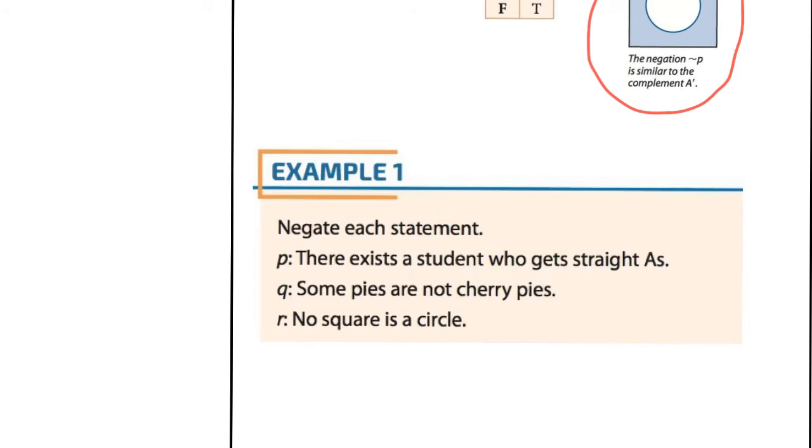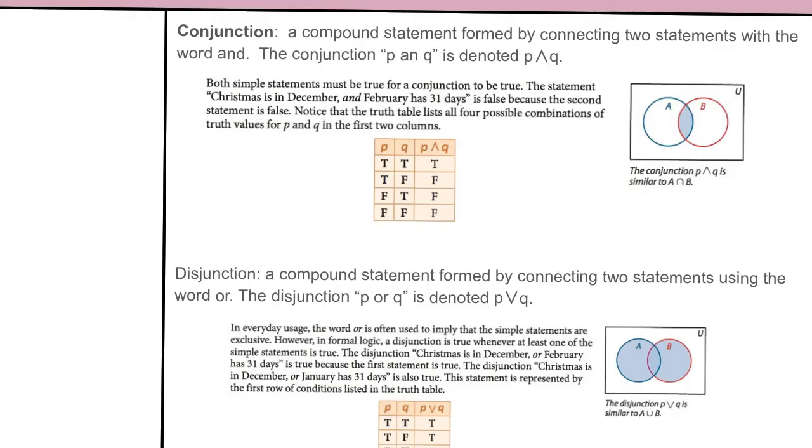And for this conditional R, no square is a circle. To negate that, we would say there's a square that's a circle. Now, some of these are logically true and not true. But for this, we're kind of suspending, because we know definitively that no square is a circle. But we're just going to put the negation is an untrue statement. There is no square that is a circle. So that just negates it.